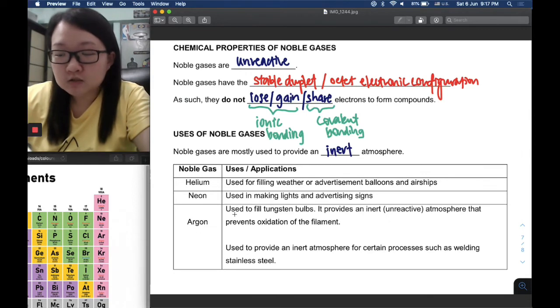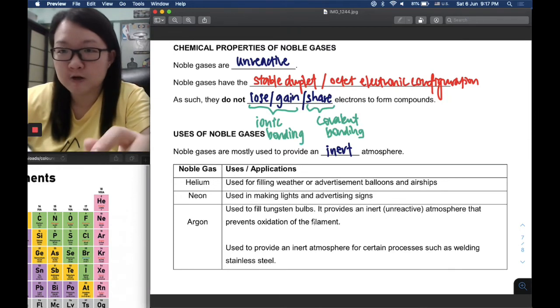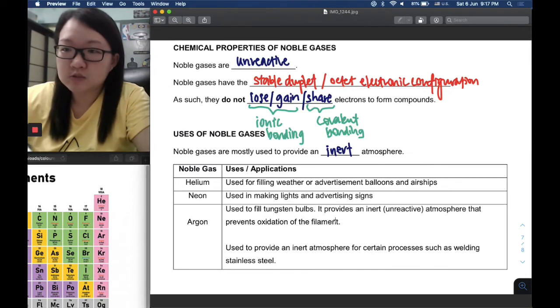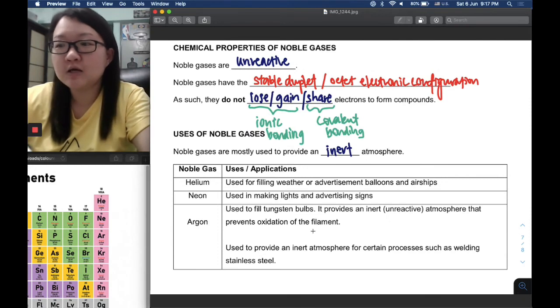Finally, argon is used to fill tungsten bulbs because it provides an inert atmosphere that prevents oxidation of the filament. The filament is a metal component, and if you leave it in air which has oxygen, oxidation can happen. An inert atmosphere filled with argon prevents oxidation. Argon is also used to provide an inert atmosphere for processes such as welding stainless steel.